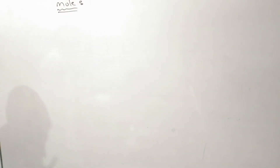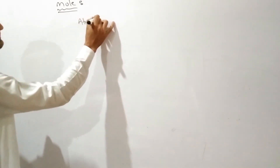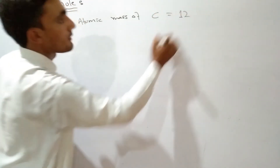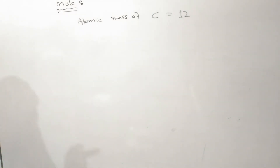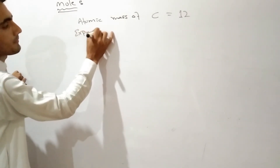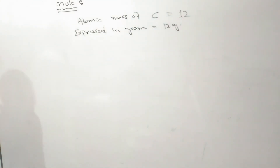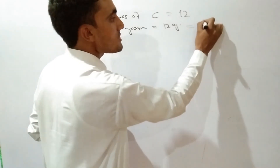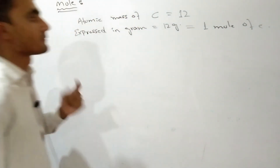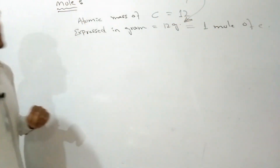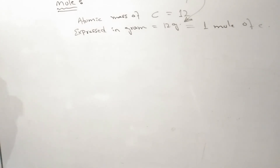For example, let us define the atomic mass of C-12. The atomic mass of carbon, which is 12, expressed in grams is equal to 12 grams. So 12 grams is equal to 1 mole of carbon. The atomic mass expressed in grams gives one mole of carbon.